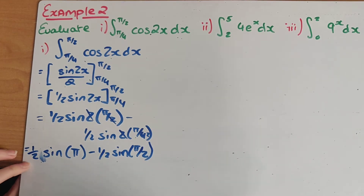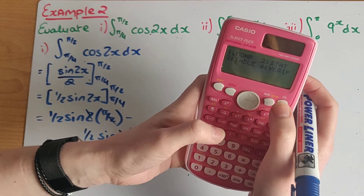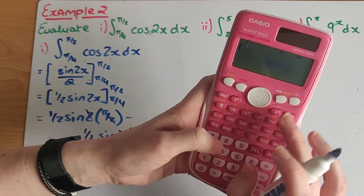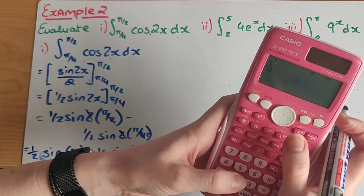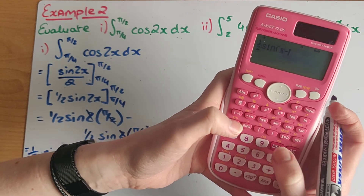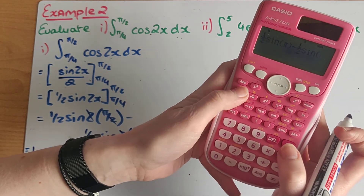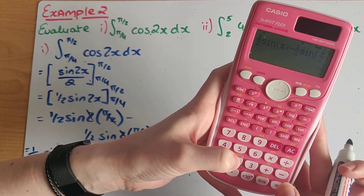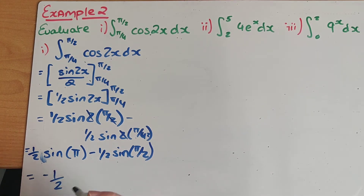Because they've given me my angle in radians, when I sub this into my calculator I need to use radians mode. I'm going to press shift mode and press four for radians. Then I'm going to type in one over two, sine of π, minus one over two, fraction button, sine of π over two, which equals minus a half. So my final answer for this example is minus a half.